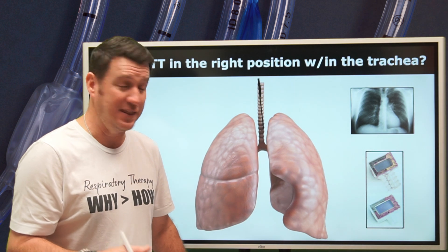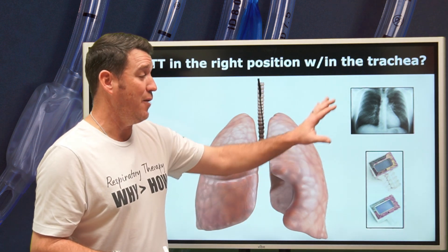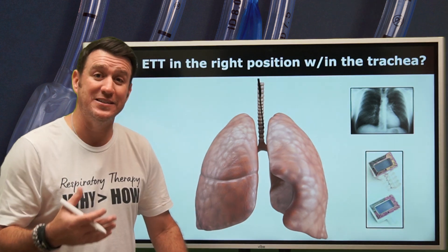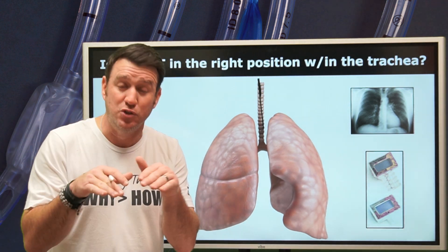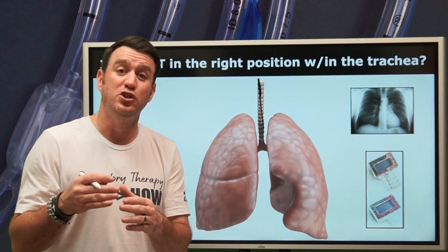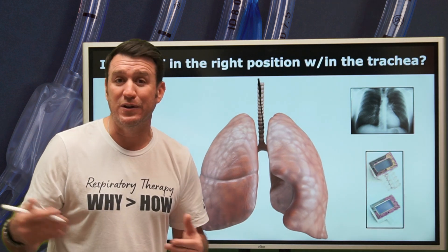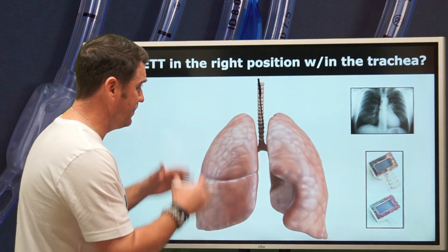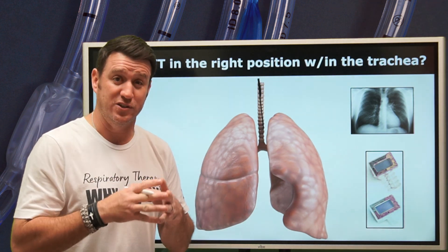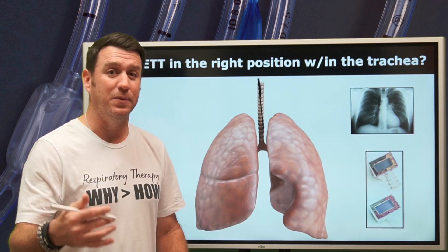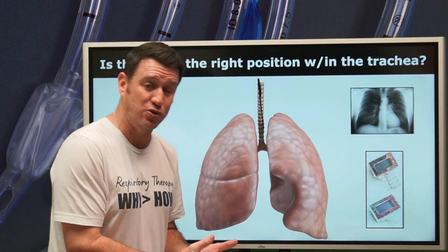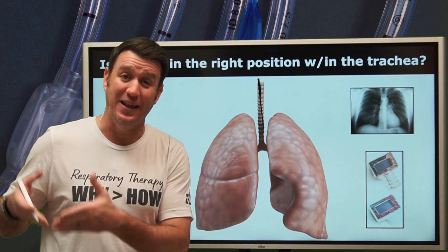With flexible bronchoscopy, if used to assist with intubation, you can confirm you're in the trachea by visualizing it directly, and then use the bronchoscopy procedure to measure that you are three to five centimeters above the carina. For students taking exams, you have to have a good feel for what the question is asking: is it asking if we are in the trachea, or if we are in the right place within the trachea?